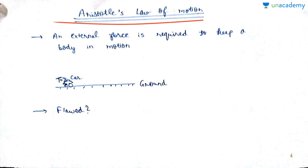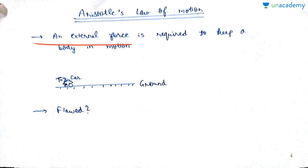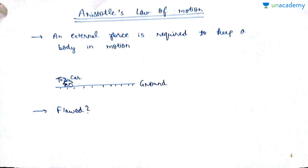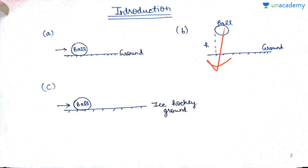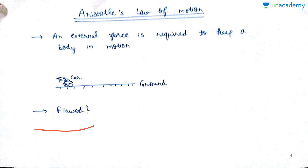Aristotle's law of motion was given way back around 200-300 BC. What Aristotle concluded after making physical observations was that an external force is required to keep a body in motion. This actually makes sense from our examples — in the dropping ball case, gravity was the external force that pulled the ball towards the ground and set it in motion. So far this seems like a pretty accurate conclusion, but is it really true? Is it flawed or not? This is what we're going to study.